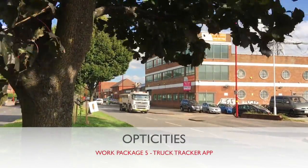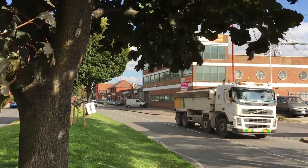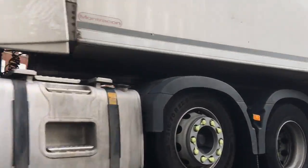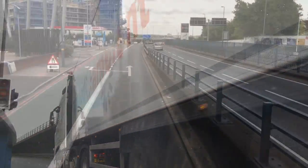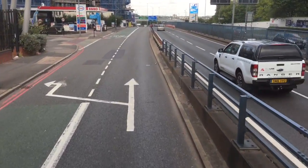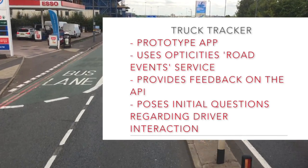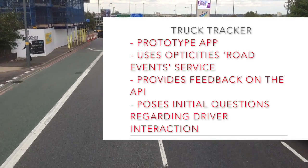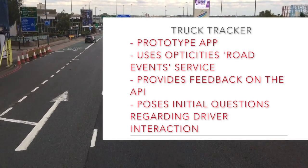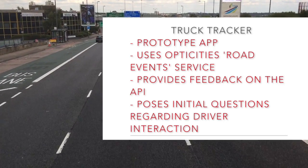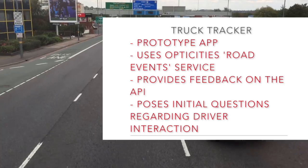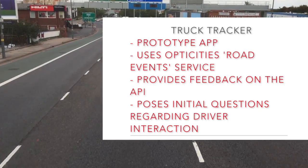The OptiCities Driver Assist app alerts drivers to incidents ahead of them on their route. The app is a prototype designed only for the purpose of the OptiCities trial. It uses data from the Road Events API service, which was specified as part of OptiCities Work Package 2. Creating the app has enabled us to provide feedback on this API's draft specification, and has also provided information about how a driver would respond to the travel information provided.